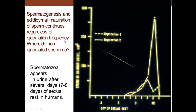Spermiogenesis and epididymal maturation of sperm continue regardless of ejaculation frequency. Where do the unejaculated sperm go? Sperm appears in the urine after seven to eight days of sexual rest - a 24-hour urine sample shows sperm appearing in the urine after about a week. Nocturnal emissions are another possible source of sperm elimination if planned ejaculation does not occur.